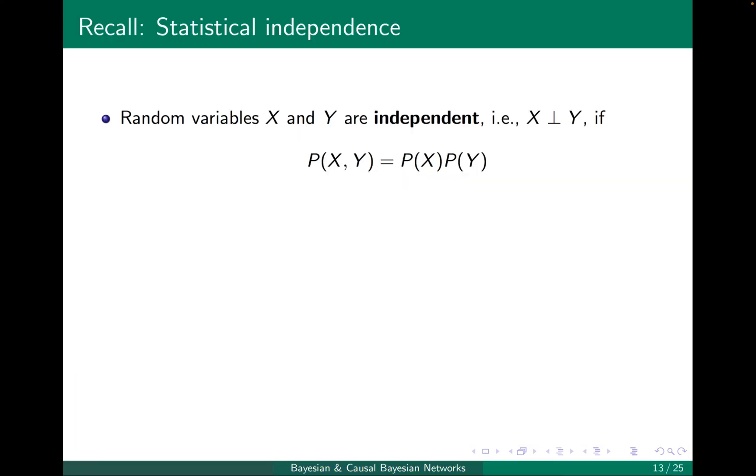Now, a little recap for those of you who may not recall statistical independence. Given random variables X and Y, we say that they are independent, and denoted in this way, if P of X and Y equals to P of X times P of Y. Or equivalently, we say P of X condition on Y equals to P of X, meaning that if we provide the external variable Y, it does not add any information to the probability of X. Or the other way around, P of Y given X equals to P of Y. So knowing X does not provide any more information on Y. It doesn't change the distribution of Y.